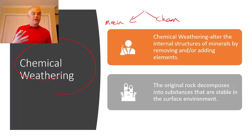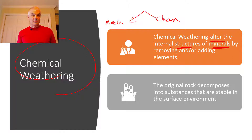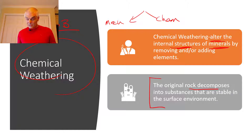Chemical weathering is different from mechanical in that chemical weathering alters the internal structures of the minerals — it changes one mineral into another. So you start with chemical A and you turn it into chemical B. They'll have the same elements, but they'll be different in the way they're arranged, and that will break it down when it reacts with certain elements. The original rock decomposes into substances that are stable in the surface environment.